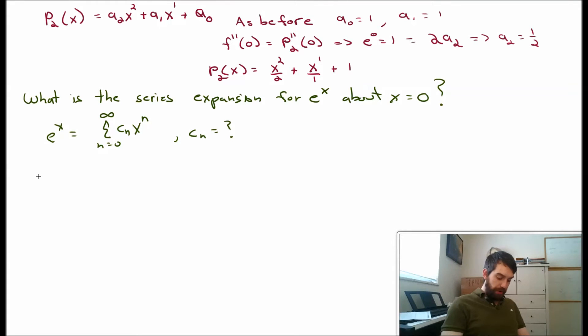So I'm going to investigate the nth derivative. d^n/dx^n of e^x, and I want to evaluate this at x equal to 0. In other words, this represents the nth derivative of e^x evaluated at 0.